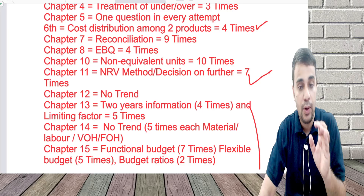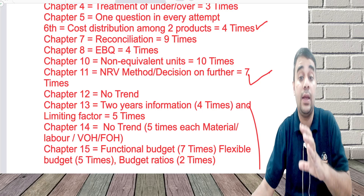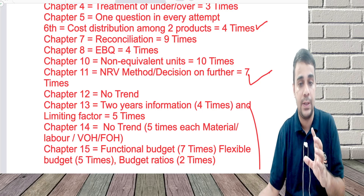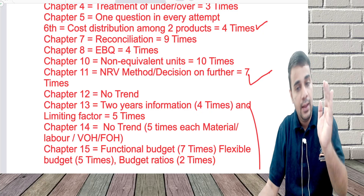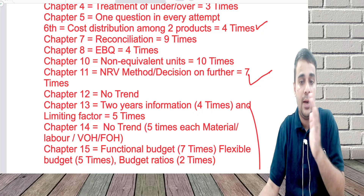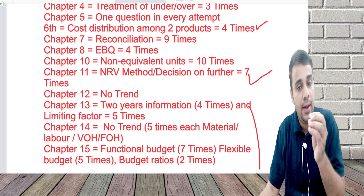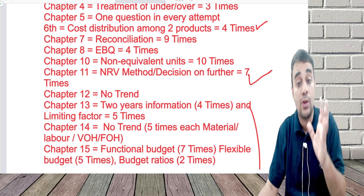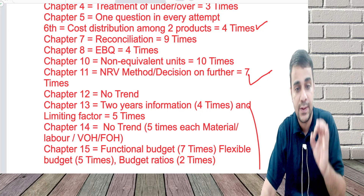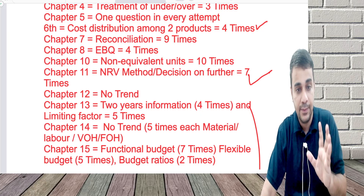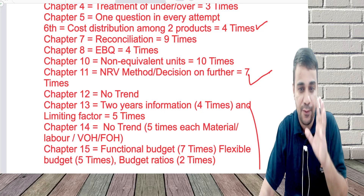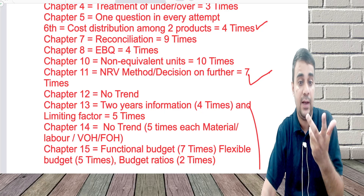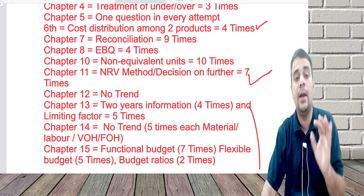Chapter 10 covers non-equivalent units. When you start this chapter, there are questions with degree of completion, FIFO method for one and two materials, average cost for one and two materials, and inter-process profit. At least cover non-equivalent units, which have been tested 10 times, and if possible also see inter-process profit — it hasn't been tested for a long time, so a question may come, though that's more of a gut feel.